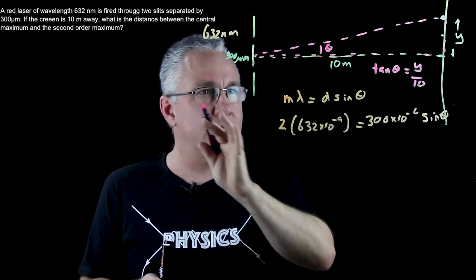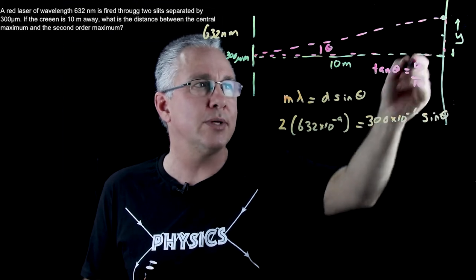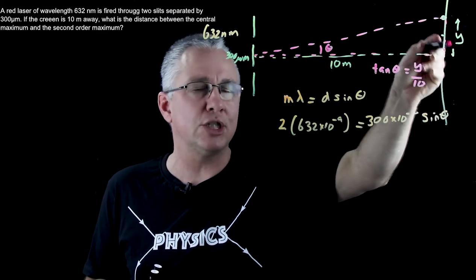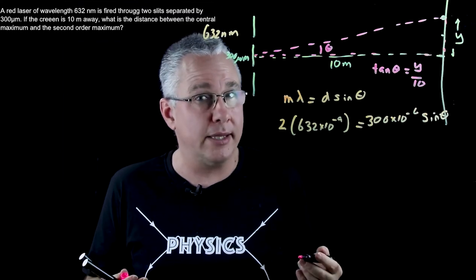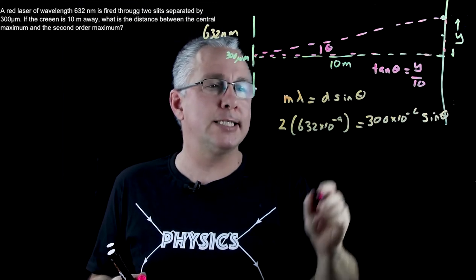Now the beauty about this is that if the screen is nice and large, in other words this is clearly much much smaller than my 10 meters, then my sine theta approximates to tan theta and so I can replace that.